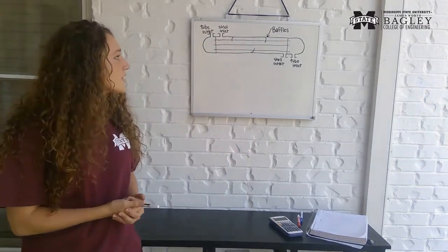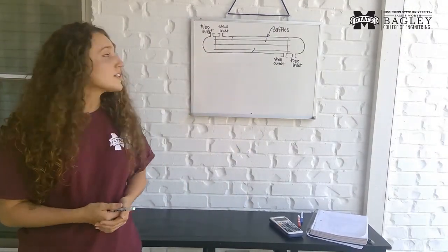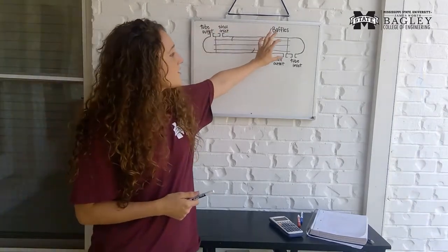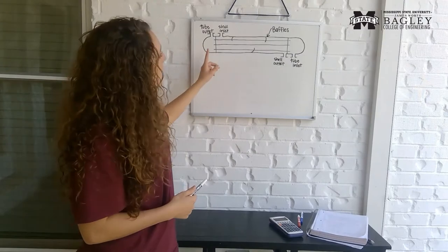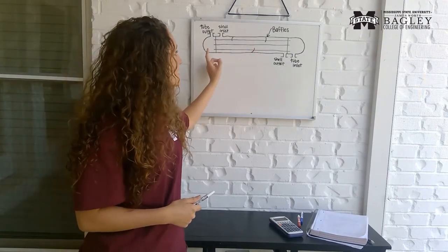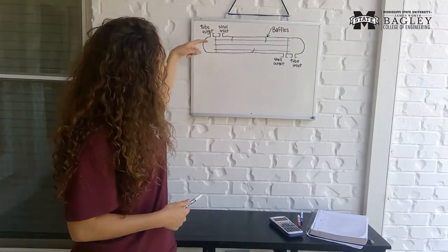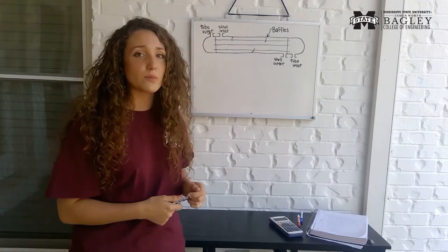I've got a rough sketch of a heat exchanger drawn behind me here and I want to talk to you about the different components of it. So here we have the body of the heat exchanger or the shell, and throughout this horizontal axis of the shell there are several long tubes. That's what these three lines are supposed to represent.